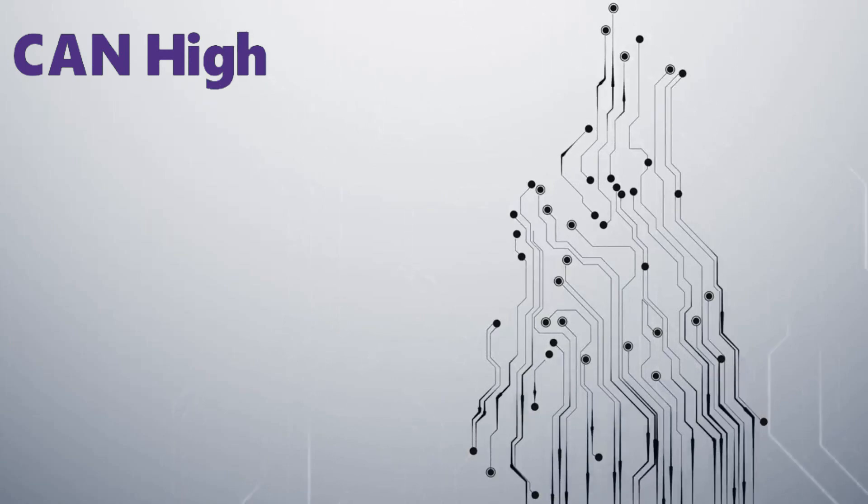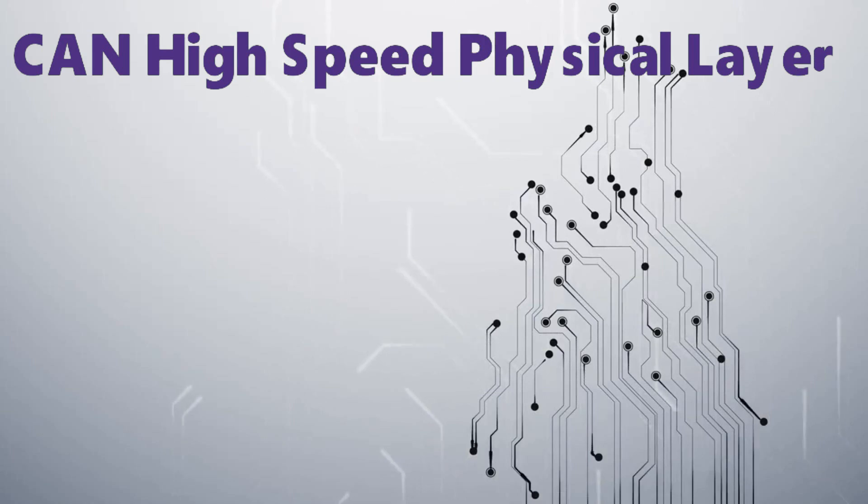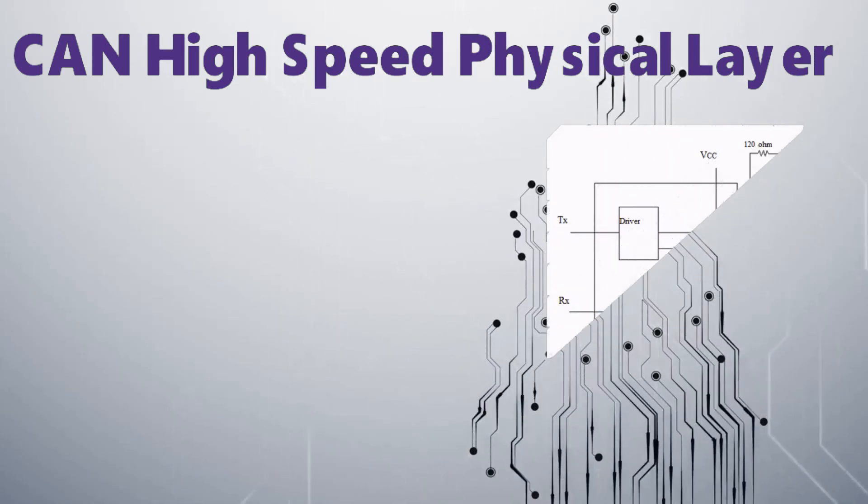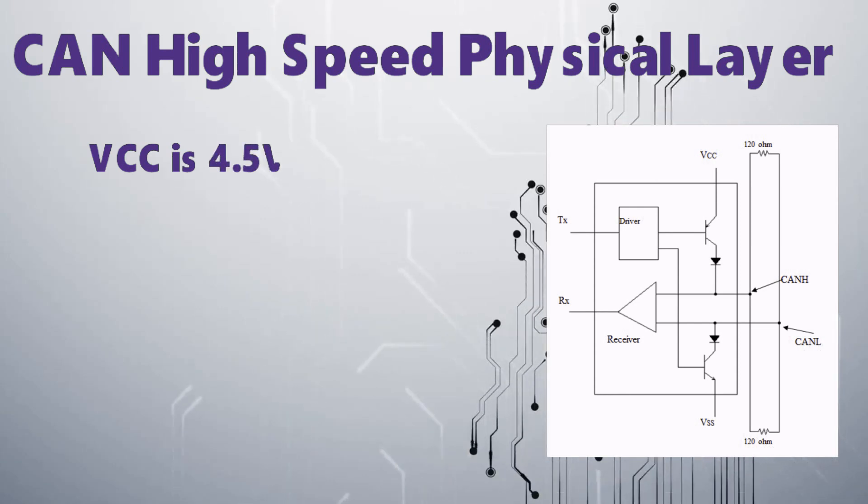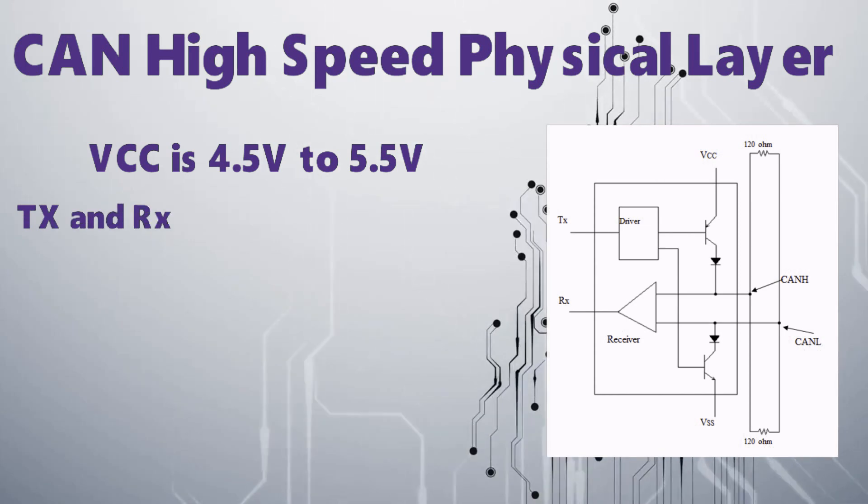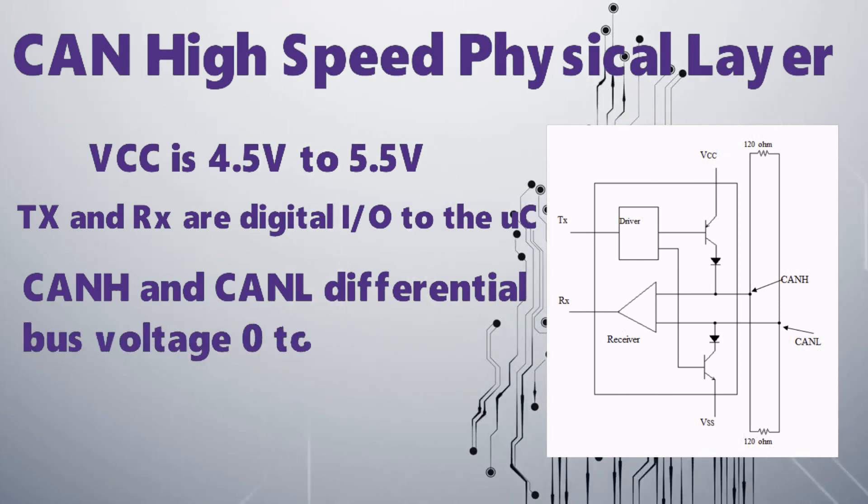You will see the CAN high speed physical layer. This is the hardware representation of the CAN high speed physical layer. Here, VCC is 4.5V to 5.5V. TX and RX are digital I/O to the microcontroller. CAN H and CAN L differential bus voltage varies between 0 to 3.0V.